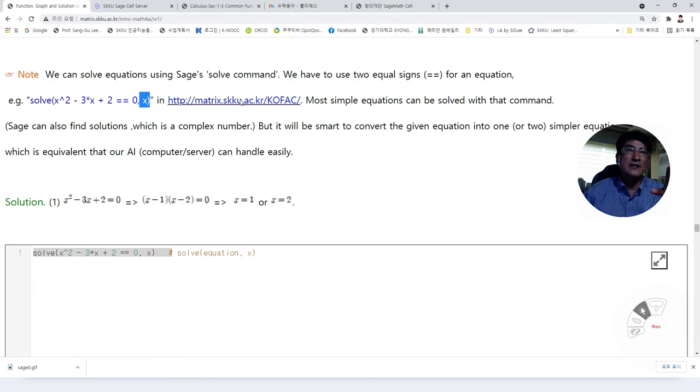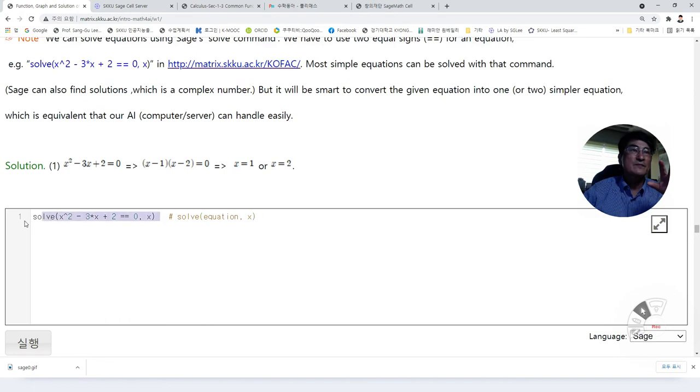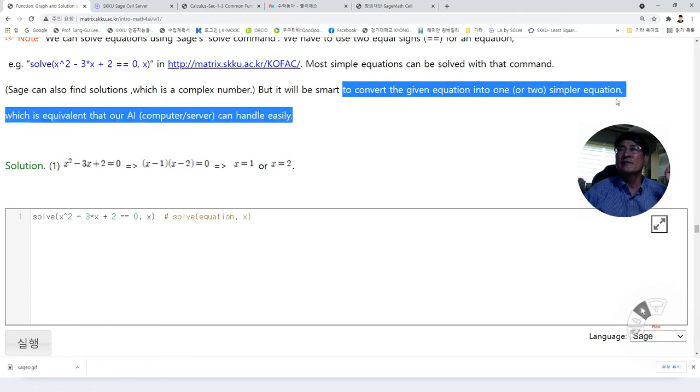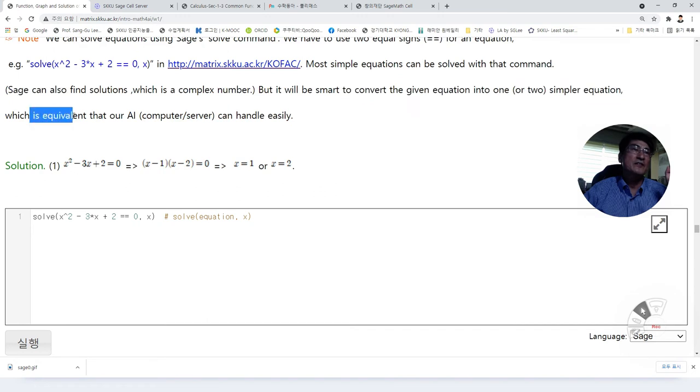In any of the code, if you copy this and practice it, then most simplification can be solved with that command. Sage can also find solutions which is a complex number. But in order to do so, we need to have more knowledge on code. Or we can be smart to convert the given equation into one or two simpler equations, which is equivalent that our AI can handle easily and fast.